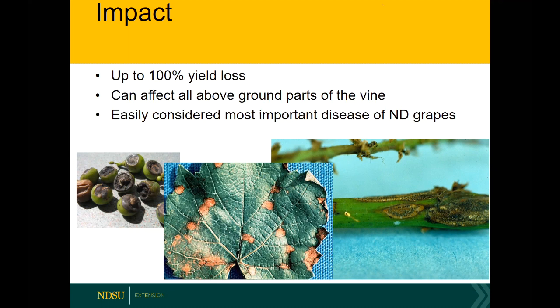This pathogen can affect all above-ground parts of the vine. It won't affect the bark or old woody tissue, but any green stems, leaves, petioles, and fruit are susceptible. It's easily considered the most important disease of North Dakota grapes, and I've received many samples of black rot over the years.